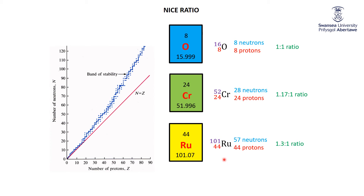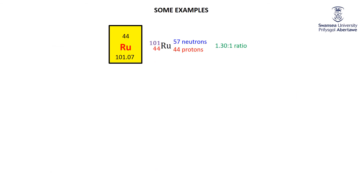Knowing this will allow you to predict for a particular isotope whether it's going to be stable — in other words, whether it's close to the band of stability. The quick and dirty way to assess whether an isotope of a particular atom is stable is how close it is to the ideal mass. That ideal mass can be read directly from the periodic table as the atomic mass, which represents the weighted average of the stable nuclei and therefore the best mass for an isotope to have the ideal neutron-to-proton ratio.